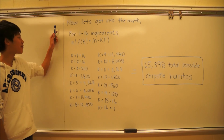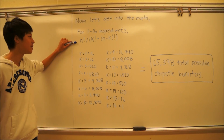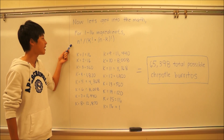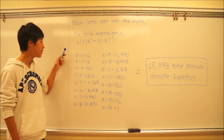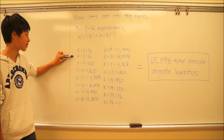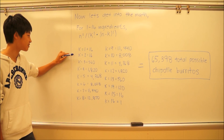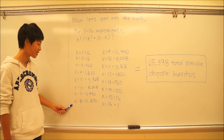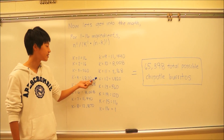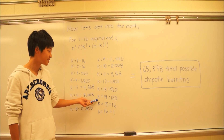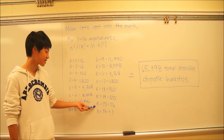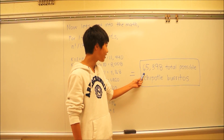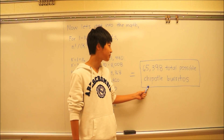Now let's get into the math! For one to sixteen ingredients, here's the equation: n factorial divided by the quantity k factorial times the quantity n minus k factorial. For k equals one, it's sixteen. For k equals two, it's sixteen again. For three, it's five hundred and sixty. Fourteen is a hundred and twenty. For fifteen, it's sixteen, and for sixteen, it's one. So in total, we can have sixty-five thousand and three hundred and ninety-eight Chipotle burritos.